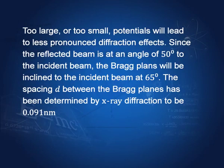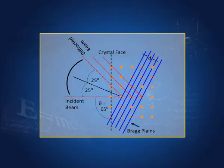The exact spacing of the Bragg planes was determined by X-ray diffraction and this was 0.091 nanometers. We will use this data to find out the wavelength of the electron and see if the de Broglie hypothesis is correct.